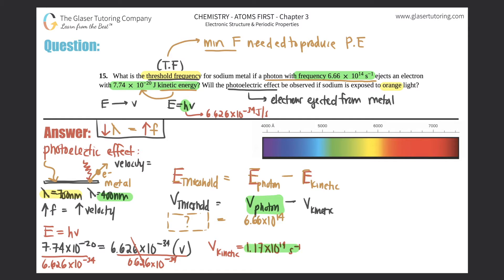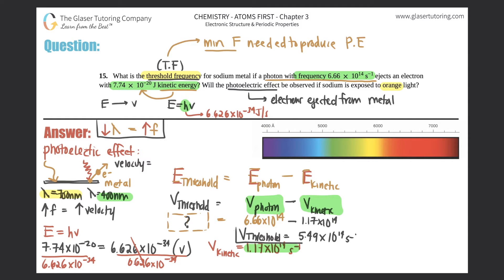Now we know both values, so we can solve for the threshold frequency: 6.66 times 10 to the 14th minus 1.17 times 10 to the 14th. That gives us 5.49 times 10 to the 14th cycles per second. That is the threshold frequency — the answer to the first part.